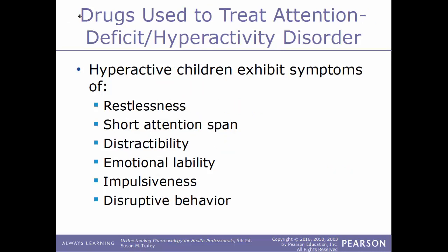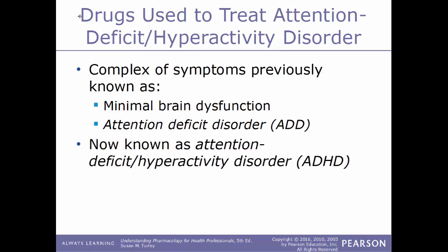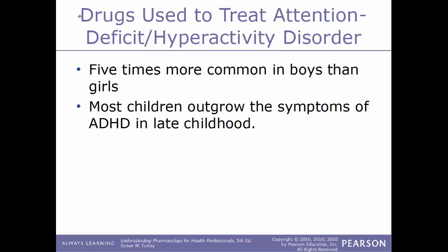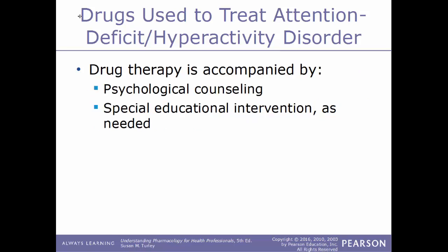Drugs used to treat ADHD (attention deficit hyperactivity disorder) address symptoms including restlessness, short attention span, distractibility, impulsiveness, disruptive behavior, and emotional lability — previously known as minimal brain dysfunction or ADD. The cause could be brain damage at birth, genetic factors, or other abnormalities. A 2007 MRI study indicated ADHD may be a delay in brain development rather than a disease. It is five times more common in boys, and most children outgrow symptoms by late childhood. Drug therapy is often accompanied by psychological counseling or special educational intervention.